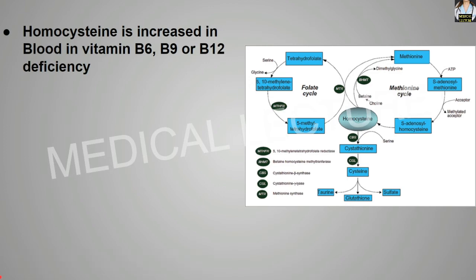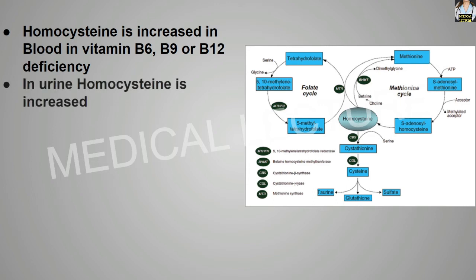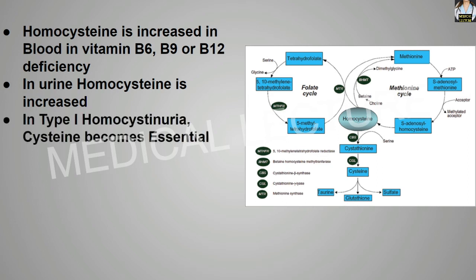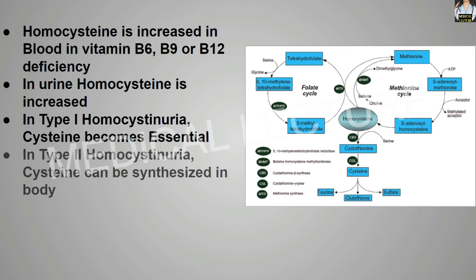Homocysteine is increased in the blood in vitamin B6 (pyridoxine), vitamin B9 (folic acid), or vitamin B12 (cyanocobalamin) deficiency, causing increased homocysteine in the urine. In type 1 homocystinuria, cysteine becomes essential. In type 2 homocystinuria, cysteine can still be synthesized in the body.